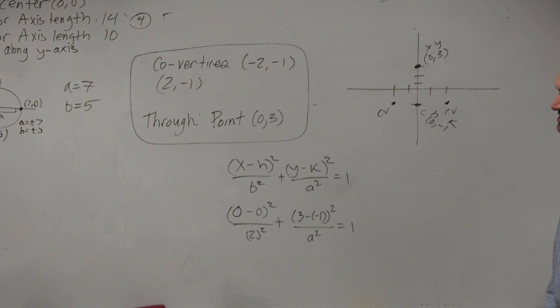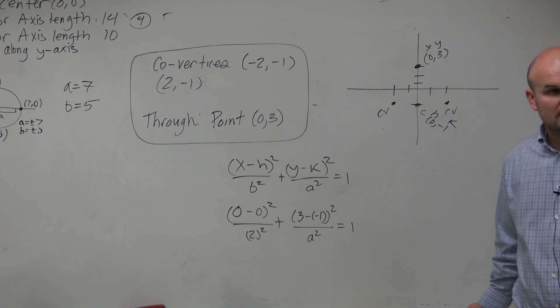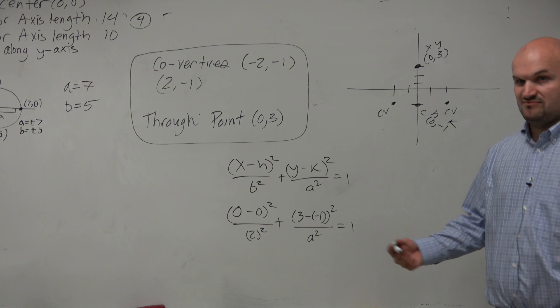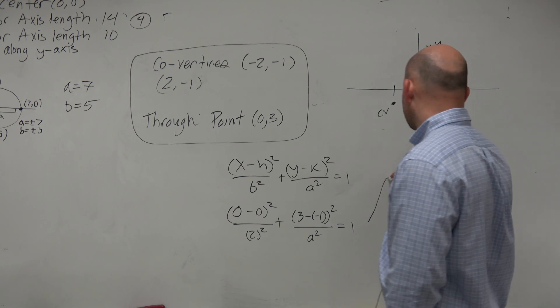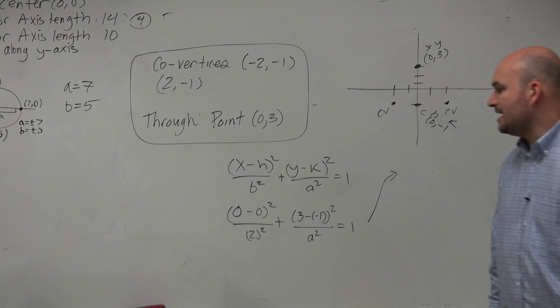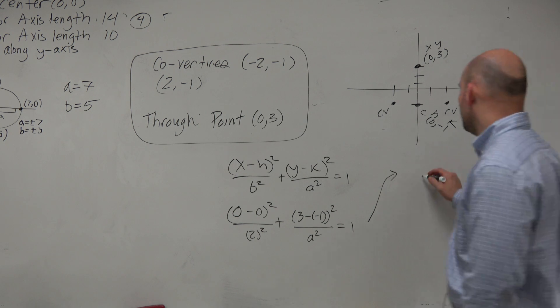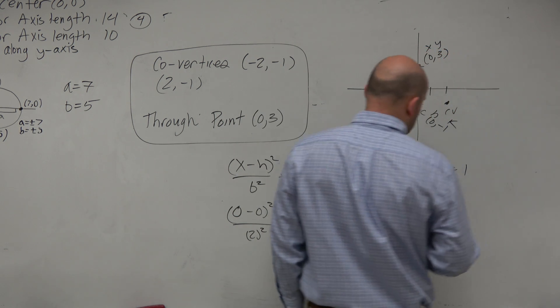Well, 0 squared is 0, or 0 minus 0 is 0. 0 squared is 0. 0 divided by 4 is 0. So really, I'm just kind of left with 3 minus a negative 1 is 4. 4 squared is 16 over a squared equals 1.